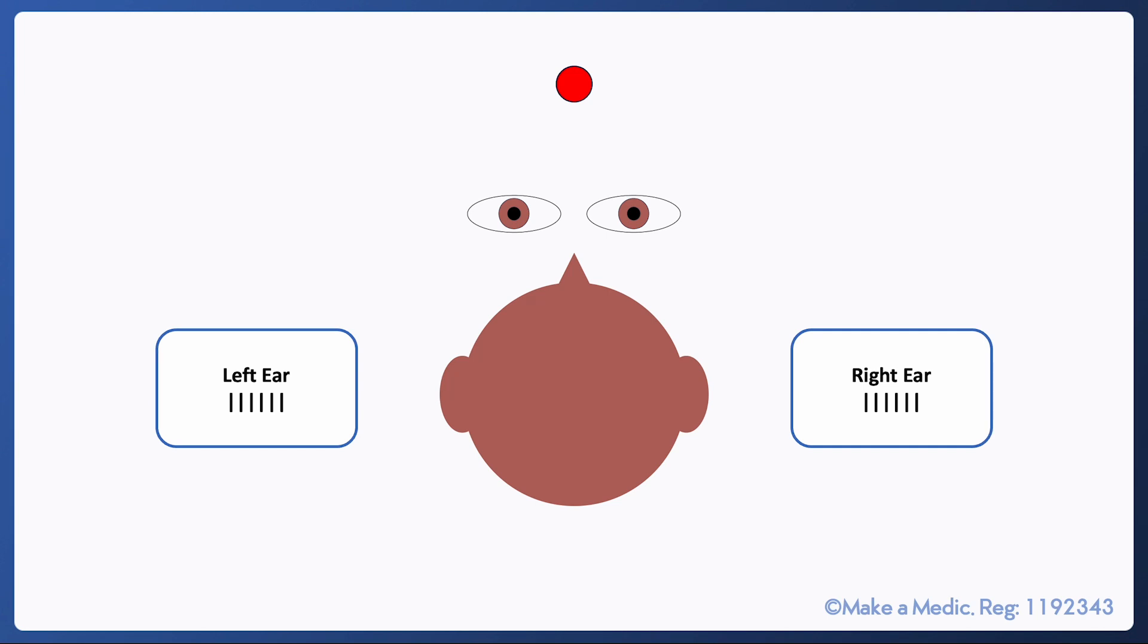Initially when the head is still the vestibular apparatus on both sides will be releasing a baseline signal to the brain. The brain interprets the balance of signals from the two sets of vestibular apparatus to determine the direction in which the head is moving.